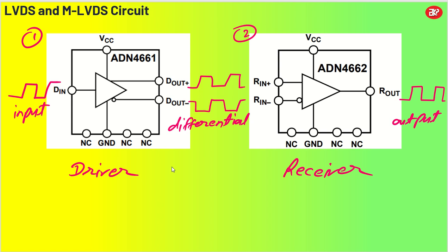Basically there are two things: one is driver and one is receiver. The driver will be receiving one input as a clock source or maybe any pulse signal, and that will be converted to D out plus and D out minus, which will be in differential form. We do that to avoid a lot of noise sources. The receiver will convert the incoming differential signal back to a signal of clock source or whatever the pulse signal that is there.